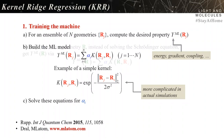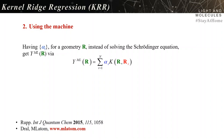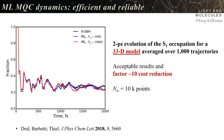Once we have alpha, we can use the machine. Every time we have a new geometry r, instead of solving the Schrödinger equation, we get the gradient by evaluating this summation — trivial and extremely fast. The machine-learned property approximately equals the quantum mechanical property. Here are results for the model-zero dynamics: two picoseconds of S1 occupation evolution for a 33-dimensional model, averaged over 1,000 trajectories, with a factor-of-10 cost reduction using 10,000 training points.